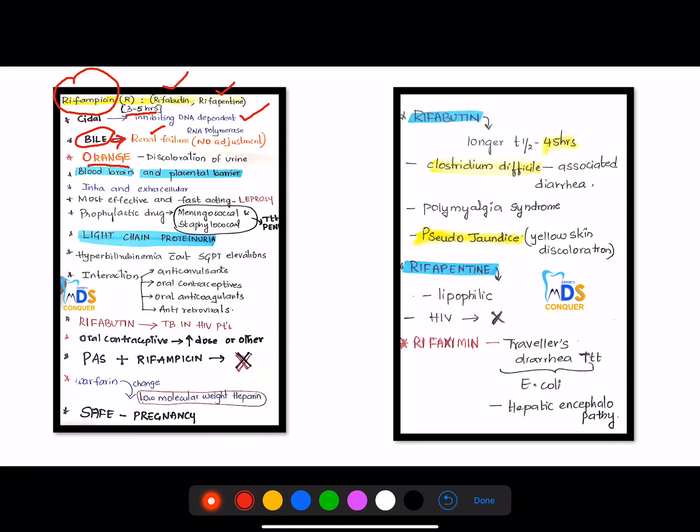Hence there is no adjustment in the renal failure patients. You can see orange color discoloration of urine when using this drug.